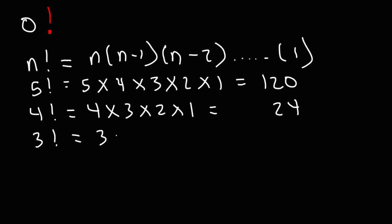3 factorial is 3 times 2 times 1, which is 6. 2 factorial is 2 times 1, which is 2, and 1 factorial is just 1 times 1, which is 1.